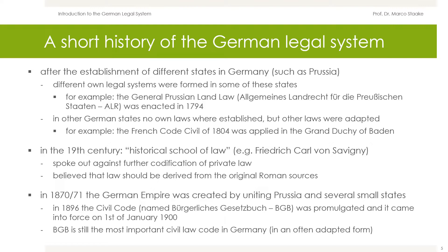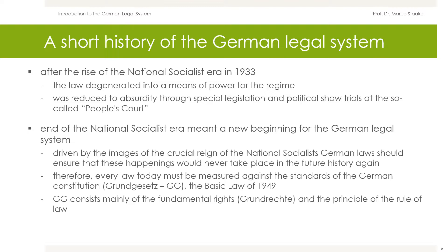After the rise of the National Socialist Era in 1933, the law degenerated into a means of power for the regime and was reduced to absurdity through special legislation and political show trials at the so-called People's Court. The end of the National Socialist Era also meant a new beginning for the German legal system. Driven by the horrors of the National Socialist reign, German laws should ensure that these happenings would never take place again.